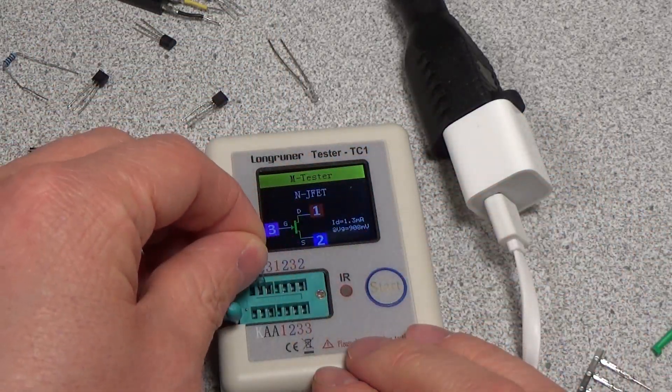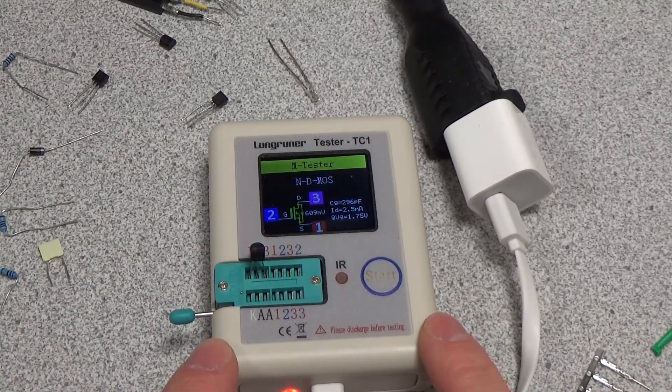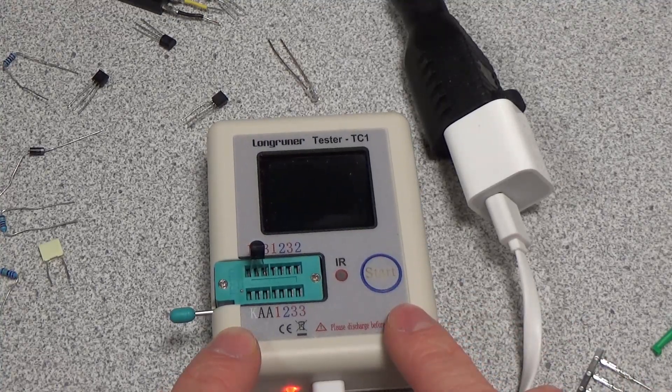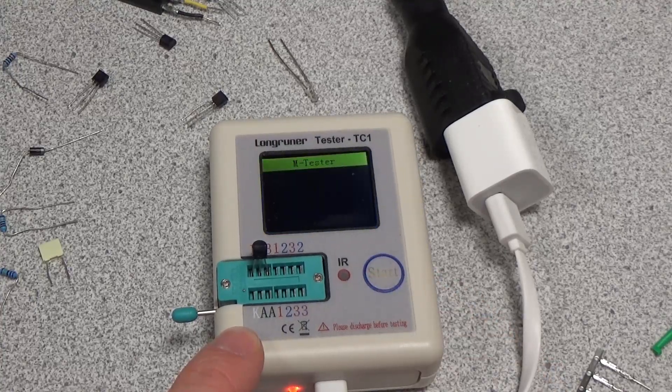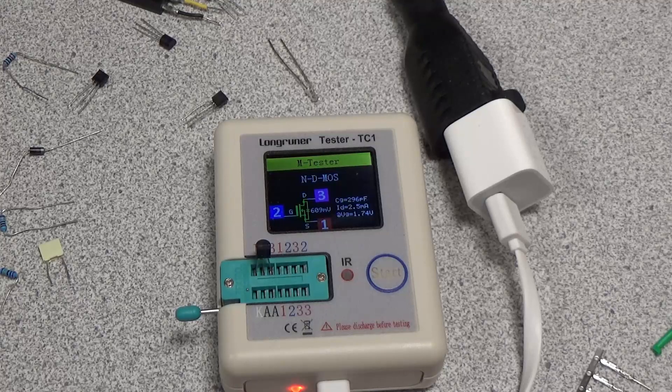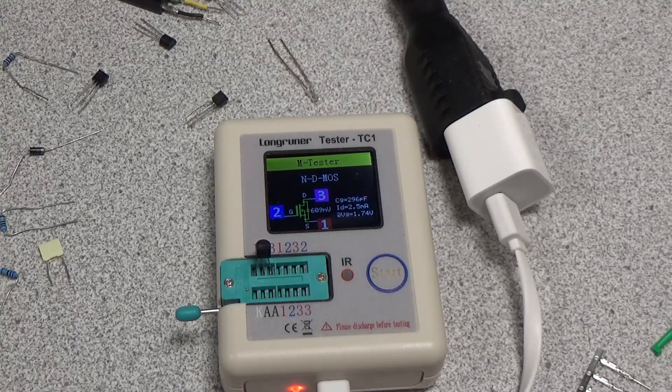Let's try, I think this might be a P-channel FET but it might also be an N-FET. I don't remember. ND MOSS. So this one, it thinks is an N-channel MOSFET. Let's try that again. Looks a little buggy, huh?